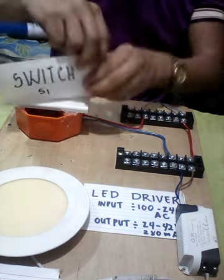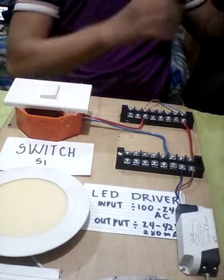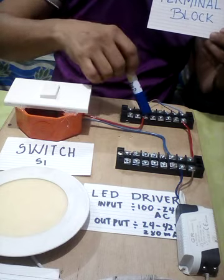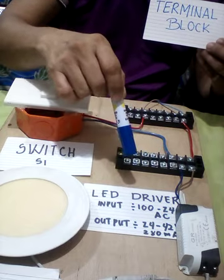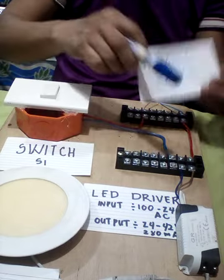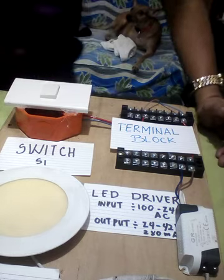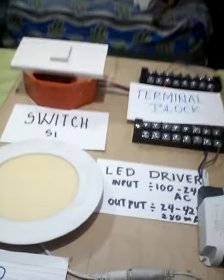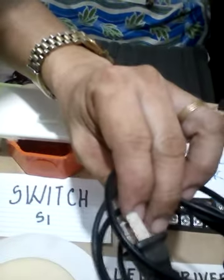This is its switch — a single switch — and we have two terminal blocks. I'm using these terminal blocks to help identify how to connect each component. So the components are: switch, terminal block, driver, LED, and the 220-volt connection plug.